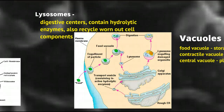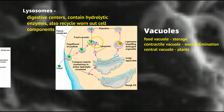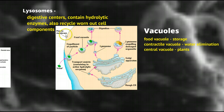Now we'll move on to the lysosome. The lysosomes are the digestive centers of the cell. They produce or contain hydrolytic enzymes — enzymes that help break down materials. They can dump those digestive materials into a food vacuole to digest food, and they can also break down and digest worn-out organelles to recycle the parts. So it's our recycling digestive center.